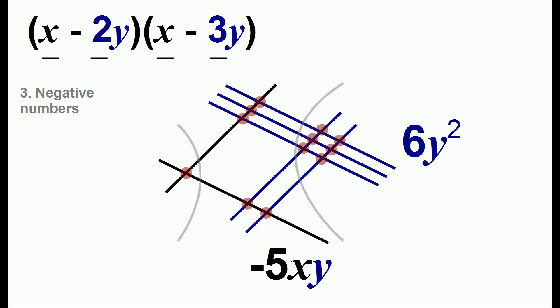Finally we have one dot which is the intersection of two black lines each of which is x. So we'll have an x squared and that gives us our answer which is x squared minus five xy plus six y squared.